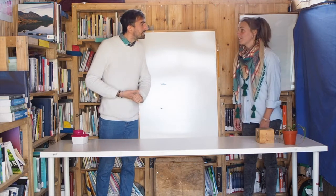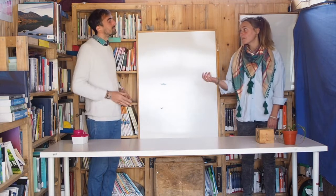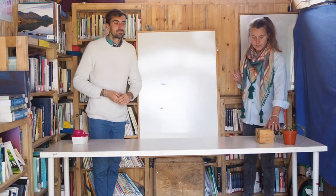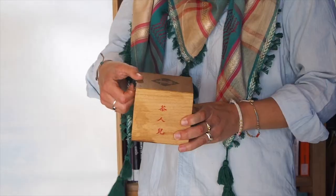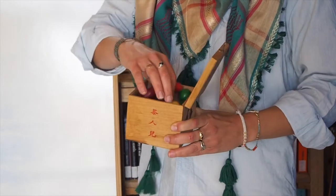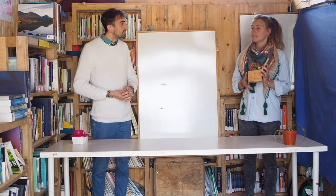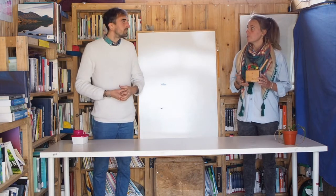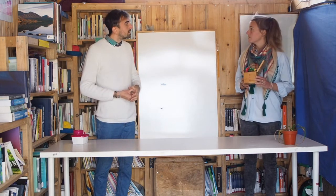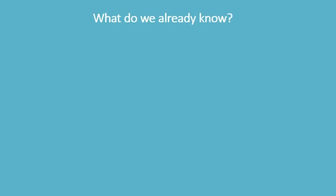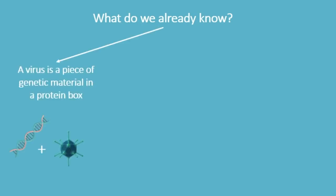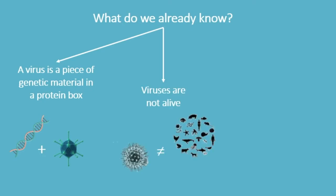I do remember. We talked about viruses, about what a virus is. We discovered that a virus is actually just a piece of genetic material in a box. It's not alive and it needs other cells to be able to replicate. A virus is a piece of genetic material in a protein box. A virus is not alive. Viruses need to use cells to duplicate.